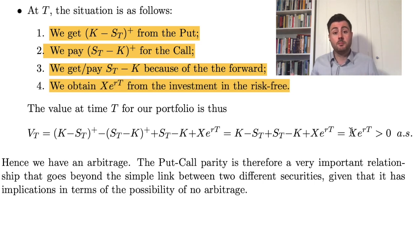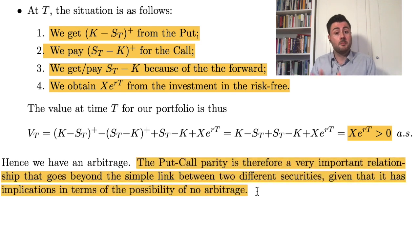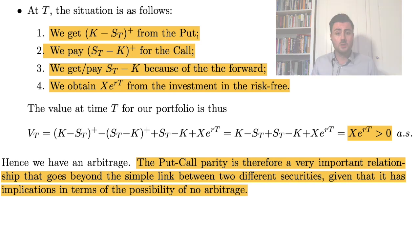It is simple to see, as shown on the screen, that the final value of our portfolio is positive almost surely. In other words, we were able to build an arbitrage because the put-call parity was violated.